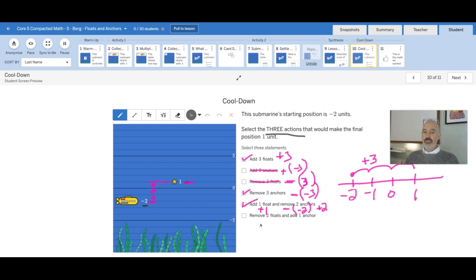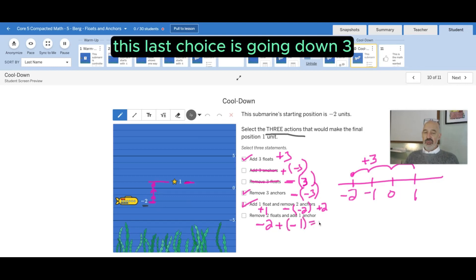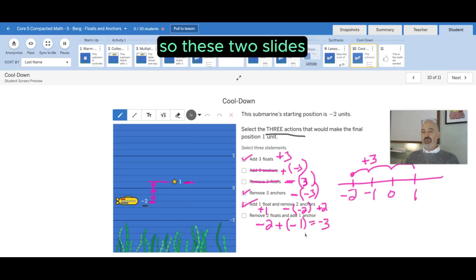Now removing two floats, that's going down two. And then adding an anchor, that's going down one more. So negative two plus negative one, this last choice is going down three.